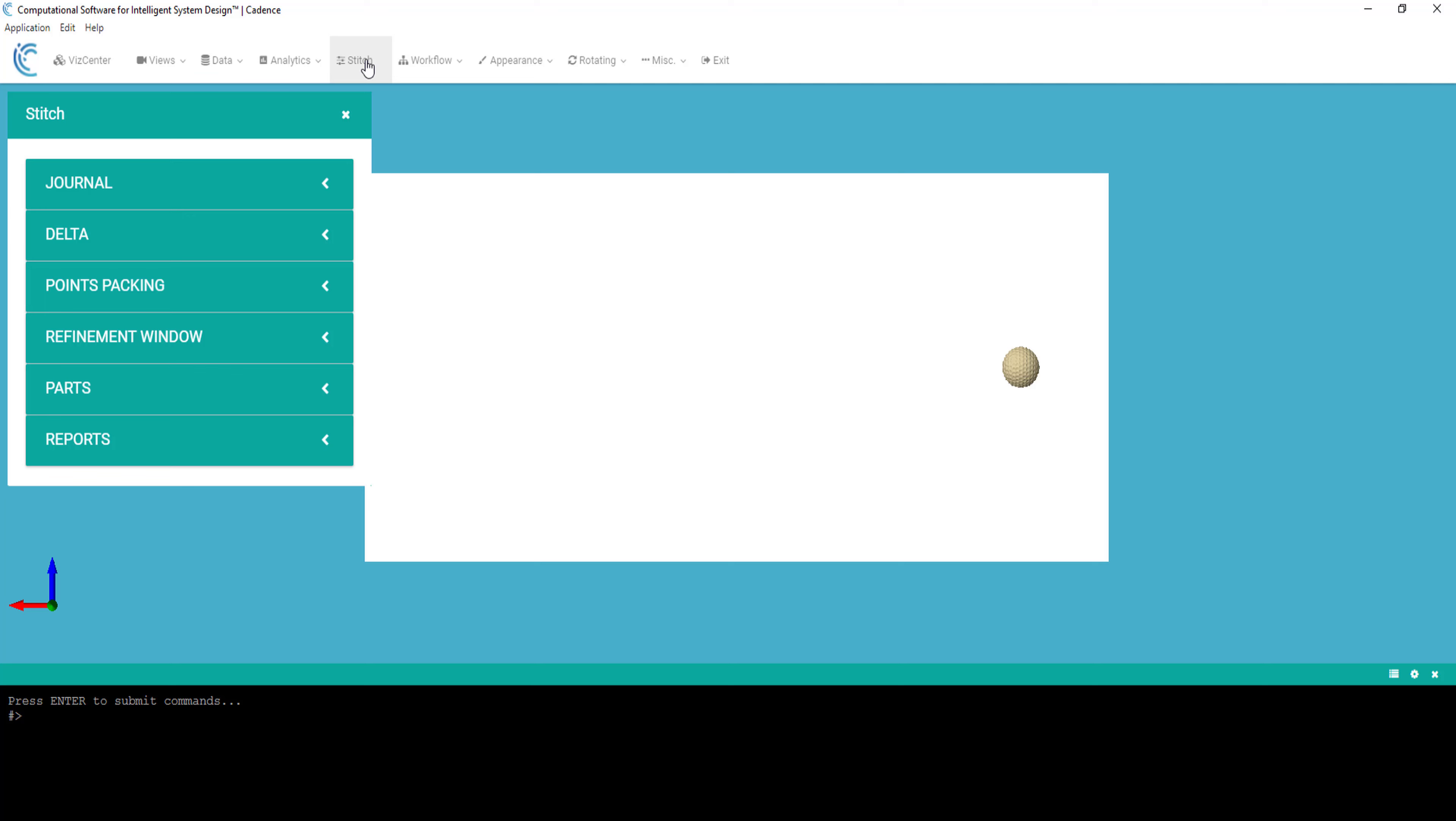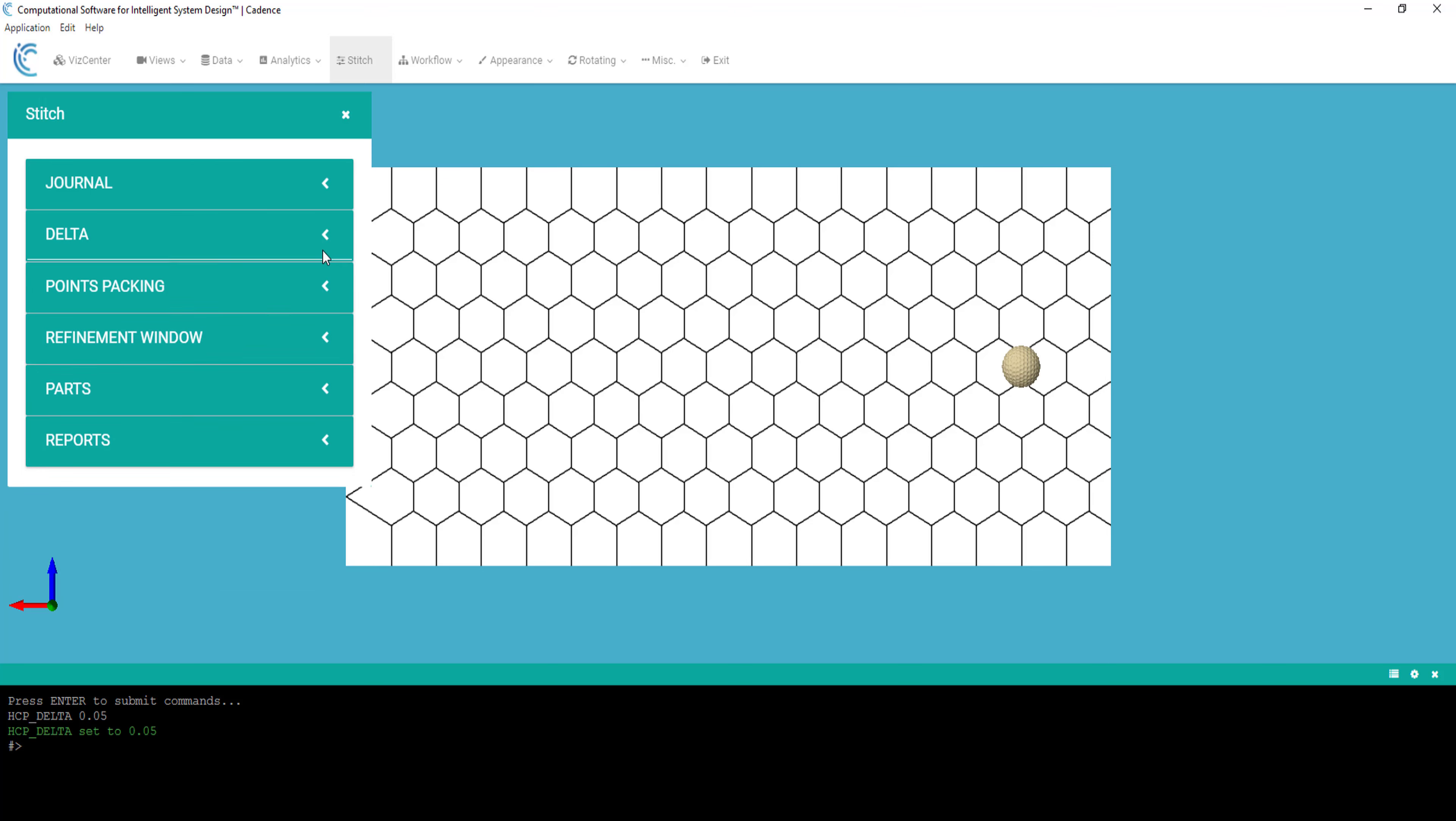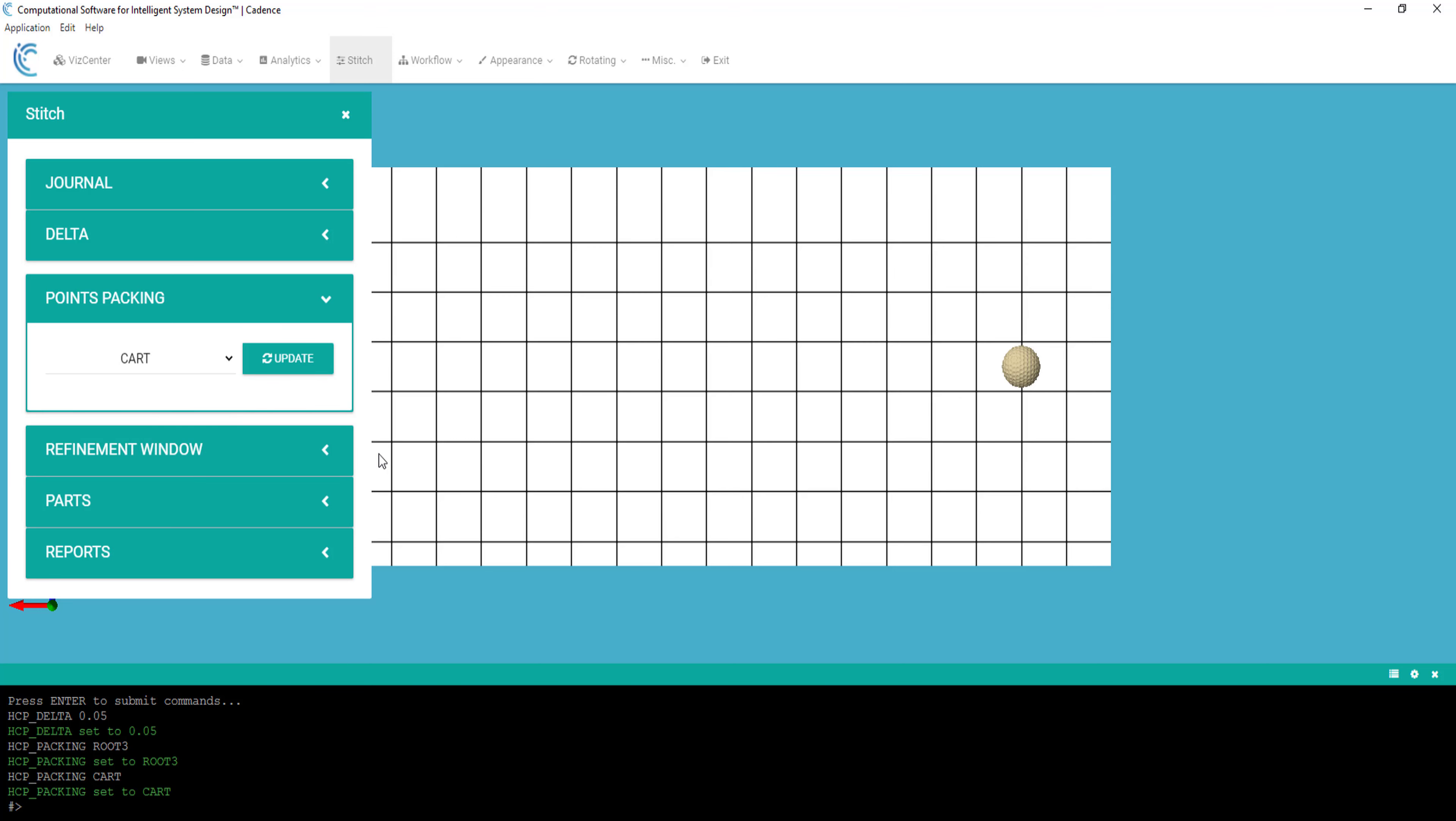Under the menu Stitch, let's apply a background cell size of 0.05, then open the Points Packing menu. What we are seeing on the screen is the default, the root 3 packing. I can switch to Cartesian to visualize the cubic lattice.